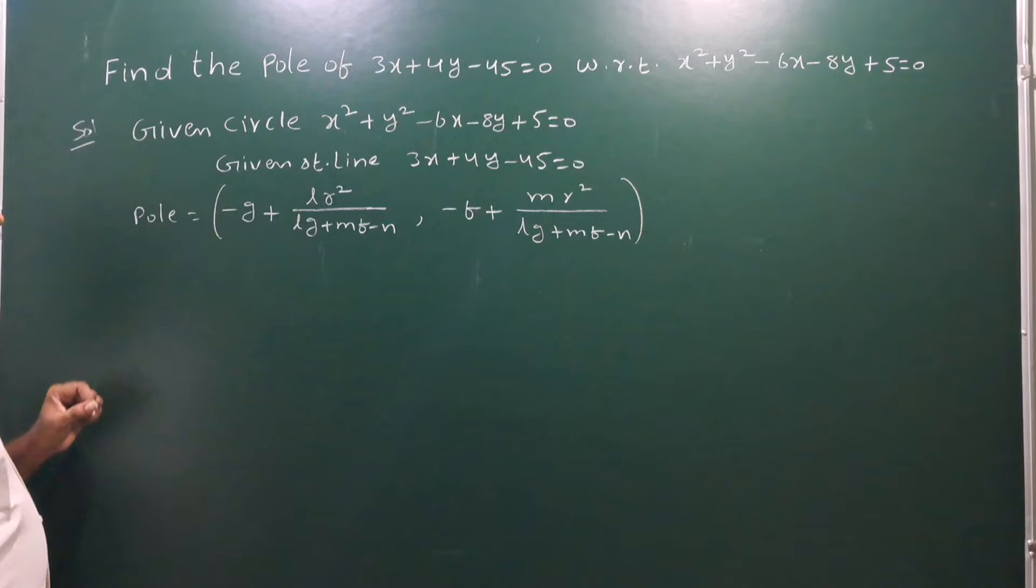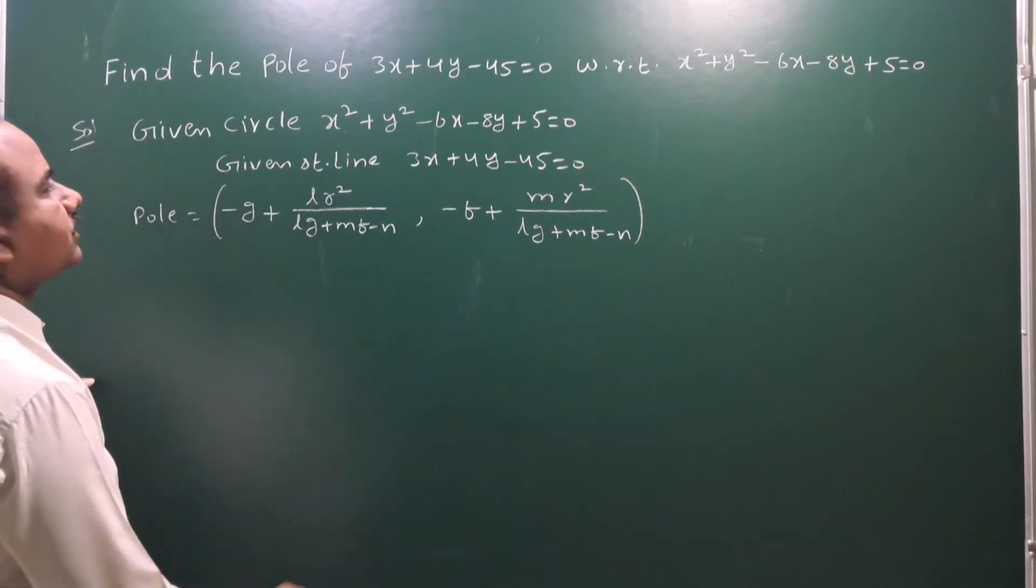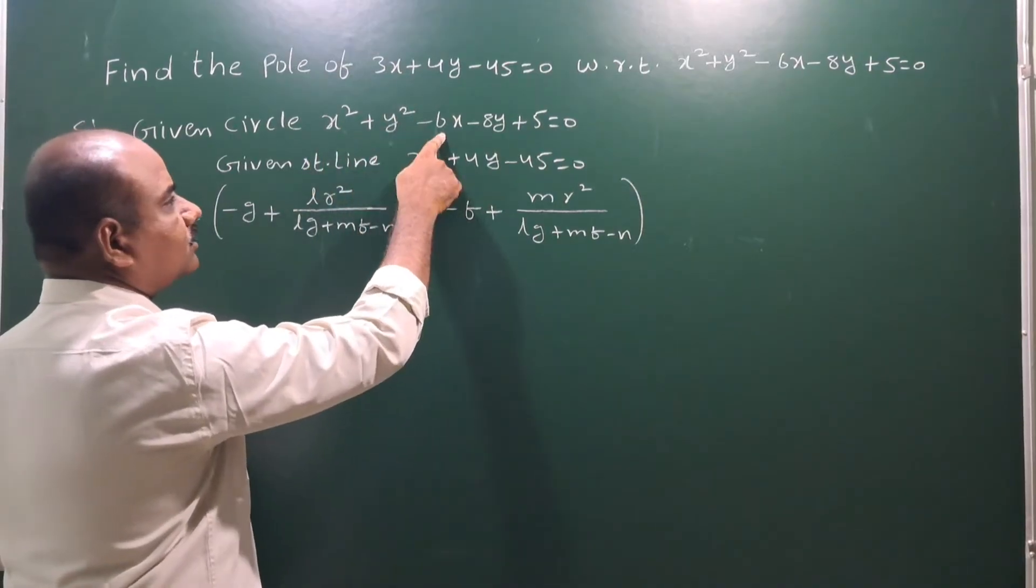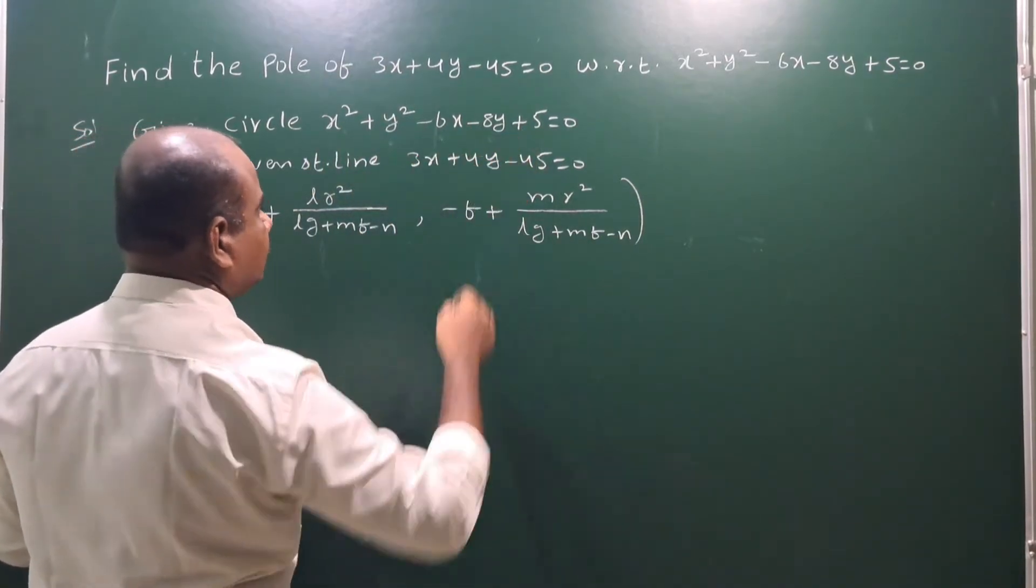Then we get the pole. So we need to find g, f, c values. So compare this circle equation to general form, x squared plus y squared plus 2gx plus 2fy plus c equals 0.